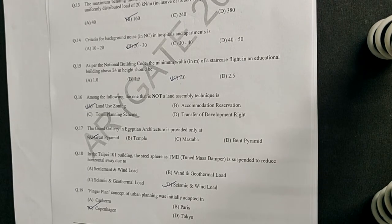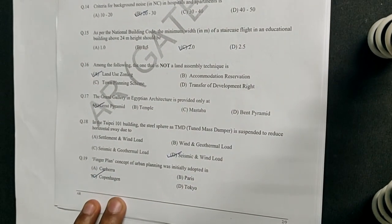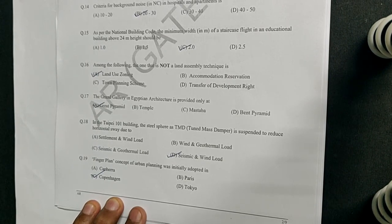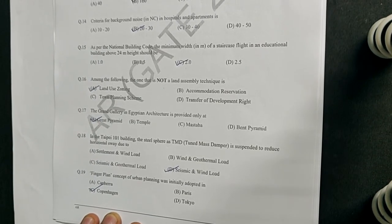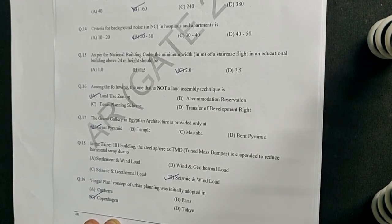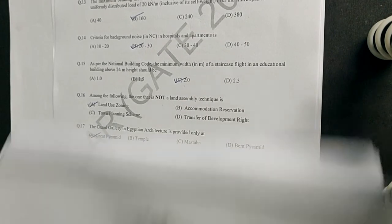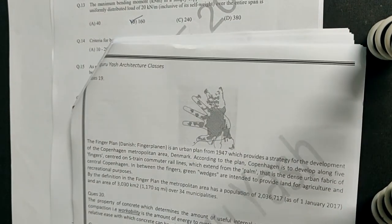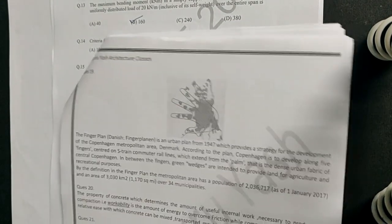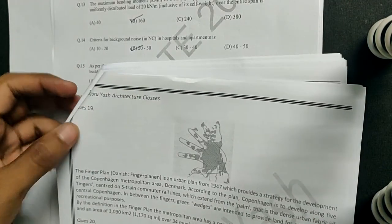The next question: the finger plan concept of urban planning was initially adopted in which city? The finger plan is very famously seen in Copenhagen, which we have also covered in urban design.